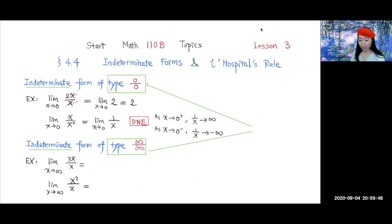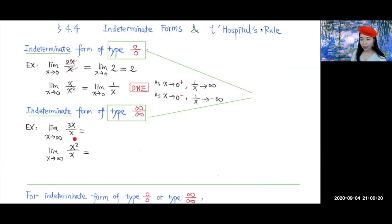Another type of indeterminate form is the infinity over infinity type. Take a look at this first example: as x goes to infinity, the numerator and denominator both go to infinity, so this is of type infinity over infinity. If we simplify the function and divide by x up and down, the x cancels out, giving us the limit of 3. The limit of a constant is that constant, so the limit exists and equals the finite number 3.